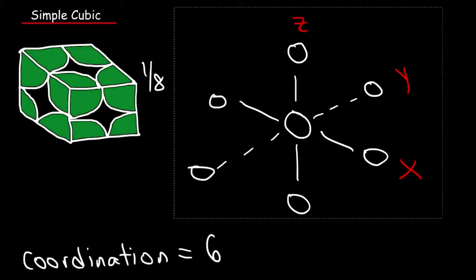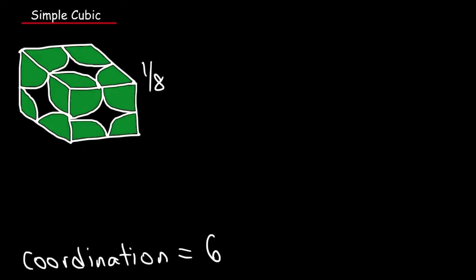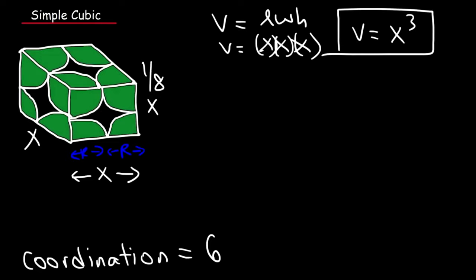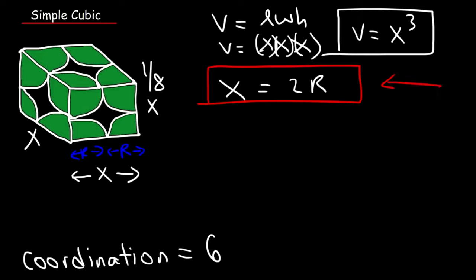The edge length is two times the radius of the atom. The volume of a cube is length times width times height, so it's x cubed — the edge length raised to the third power. Since each edge length equals 2r, the volume of the unit cell is (2r) cubed. Make sure you remember this equation when dealing with simple cubic structures.